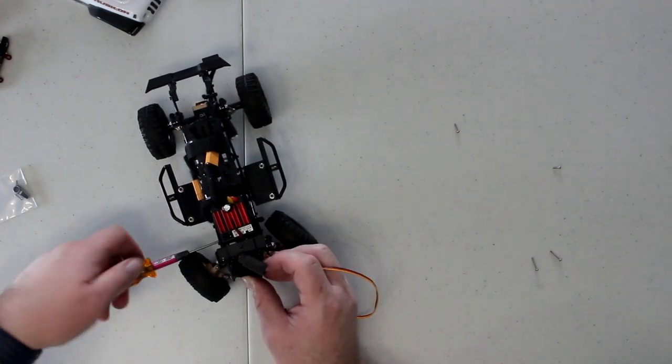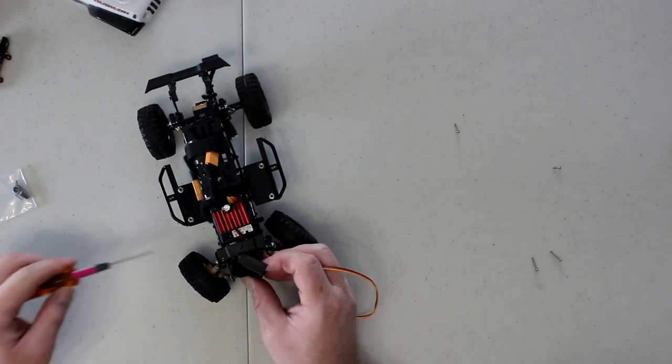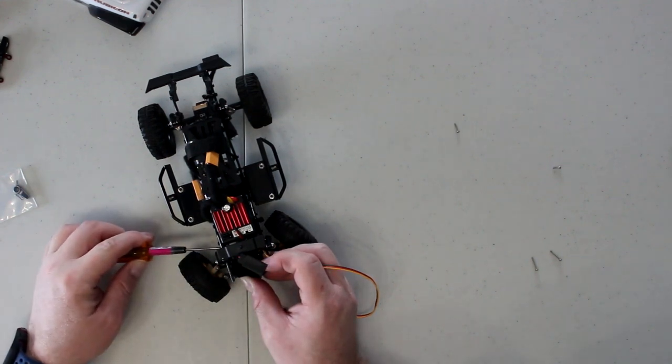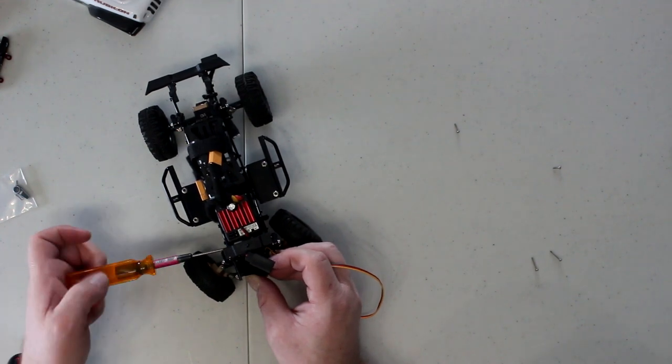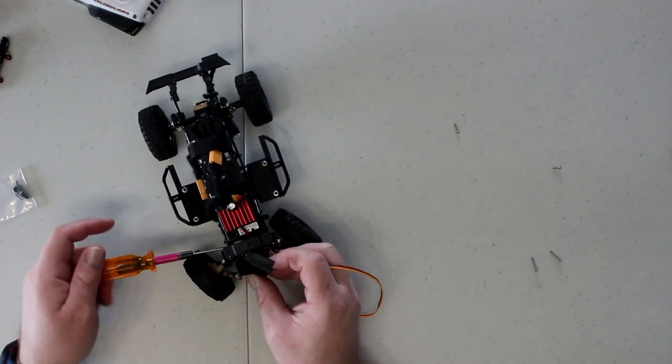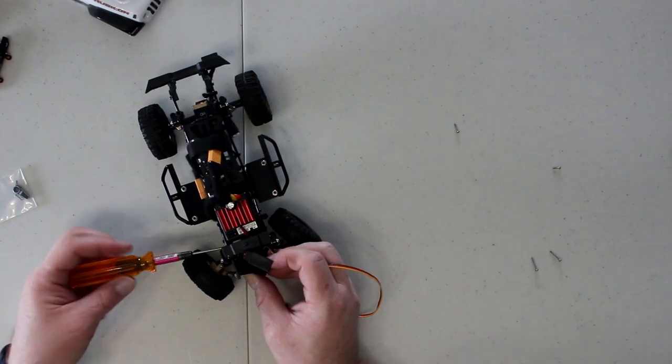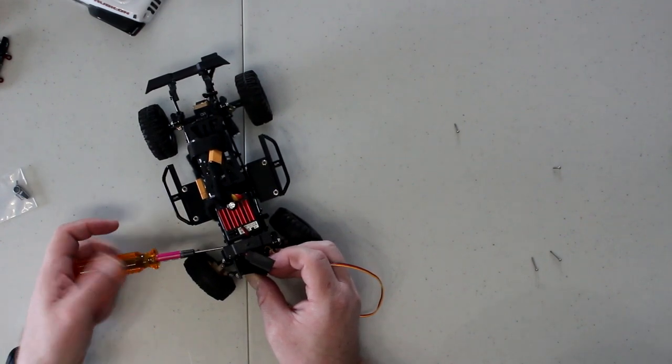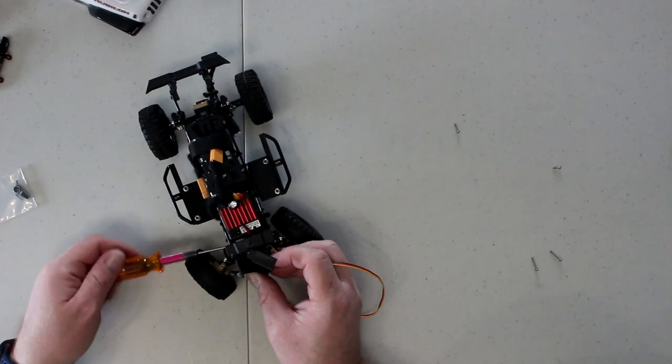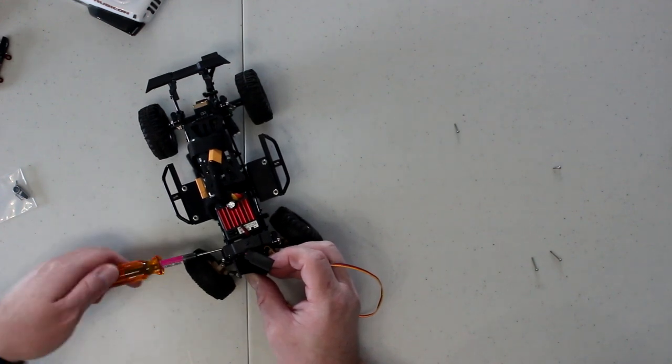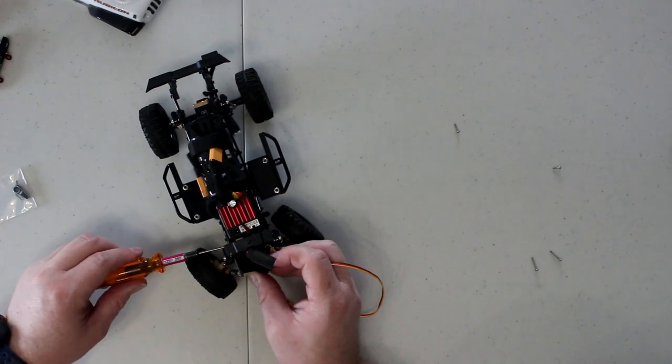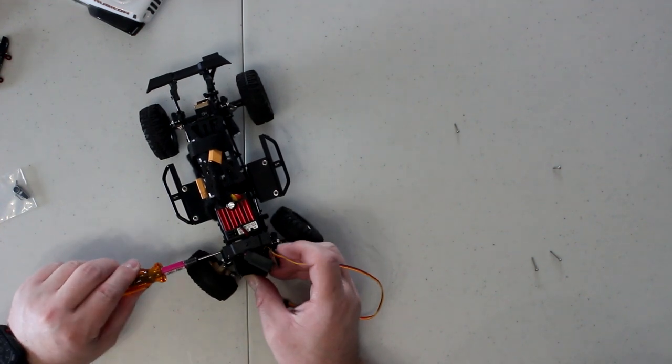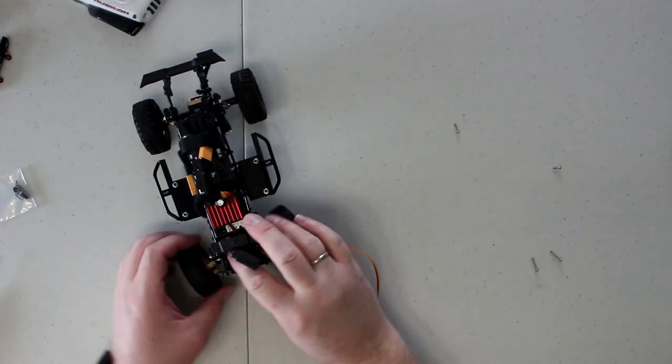There we go, there we go. And on these types of screws, I would not use a drill. These are tiny screws and they're easy to break. There we go, there we go. Now that's bolted.